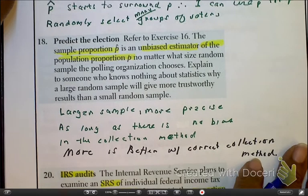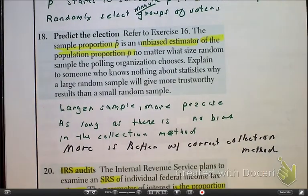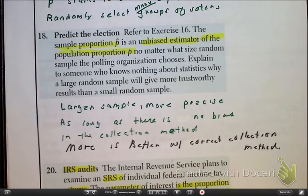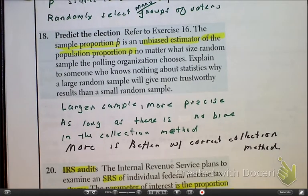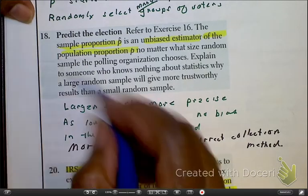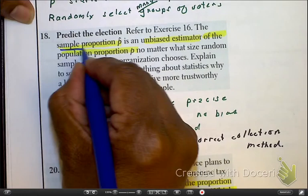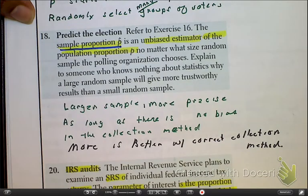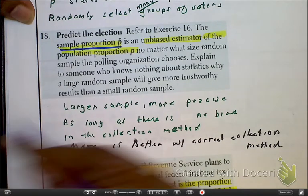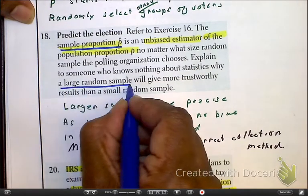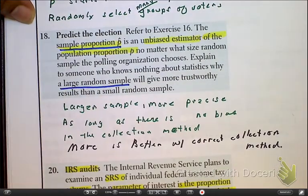Now, pause to read number 18. So, as we're looking at 18, again, we're predicting an election, and we have our sampling proportion as we continue to get used to the notation p hat as an unbiased estimator. Okay, so they want us to explain, someone that doesn't know statistics, how large sampling will make it more trustworthy.